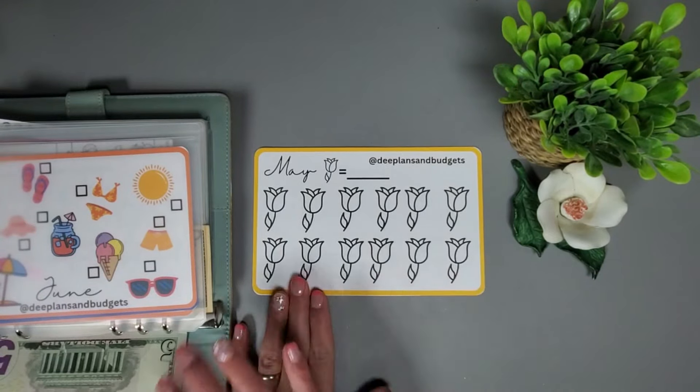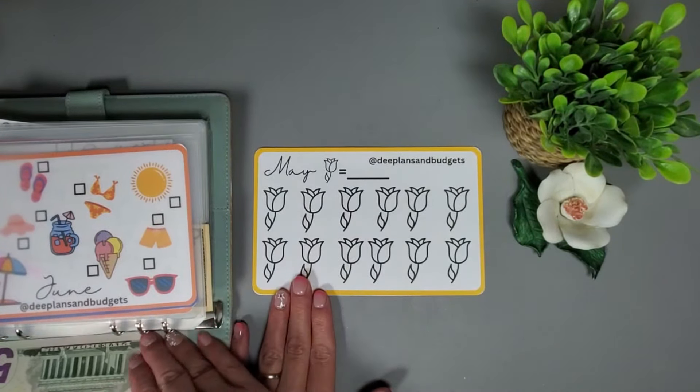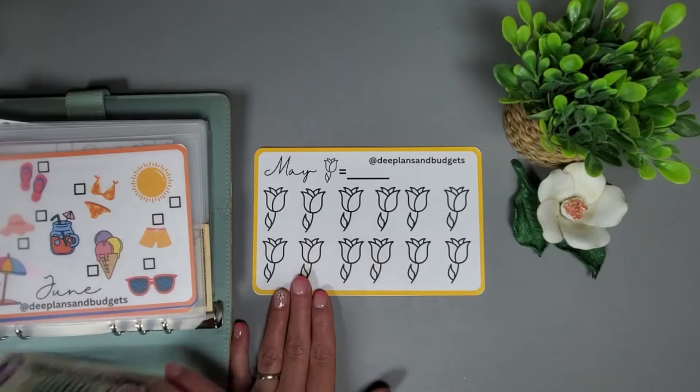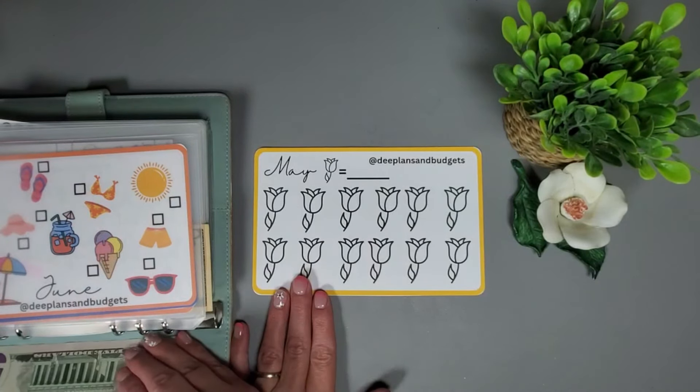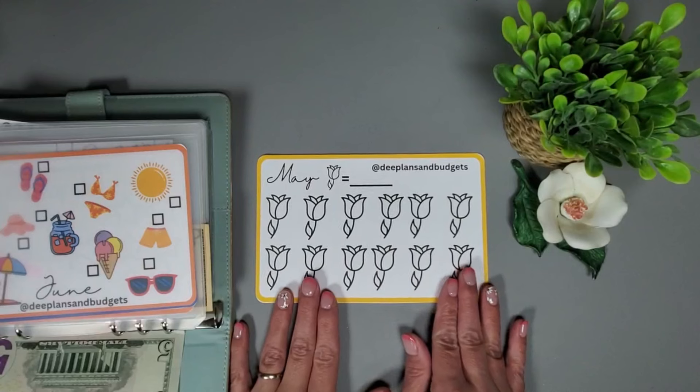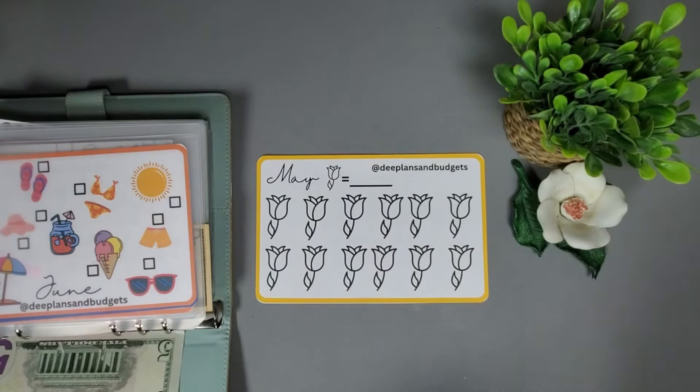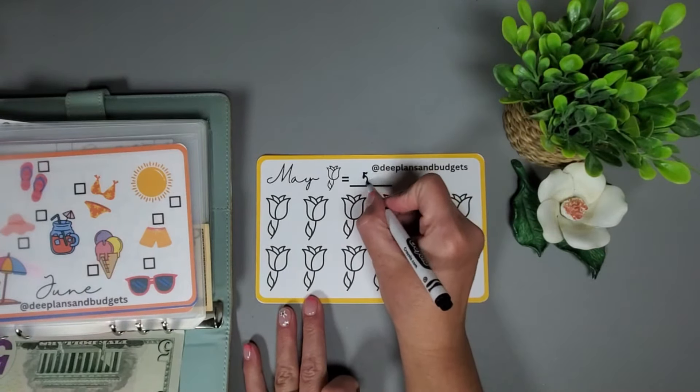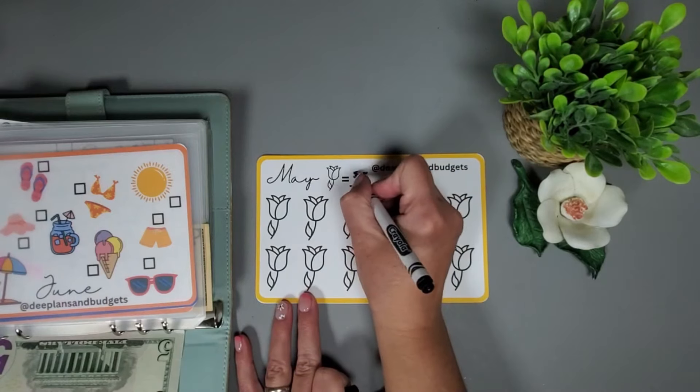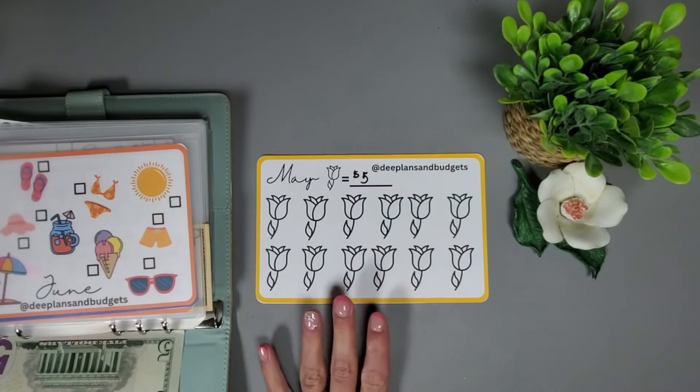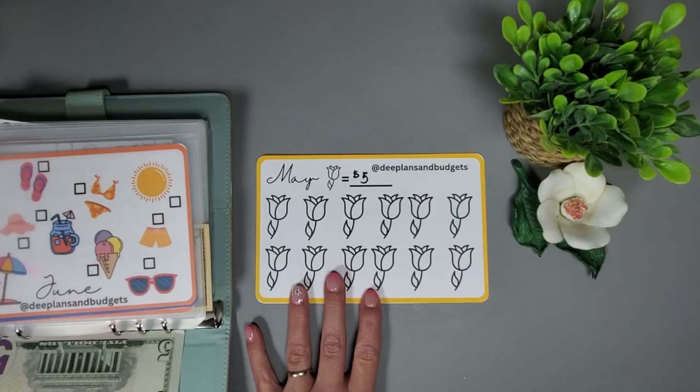I start off with this cute set of challenges that I got from D at D Plans and Budgets. I'm gonna do five dollars for each icon, so let me get a marker so I can write down that I am doing five dollars for each flower and I will go ahead and get one flower colored in.